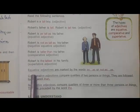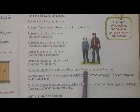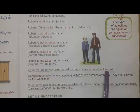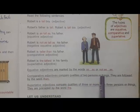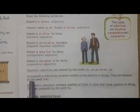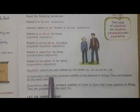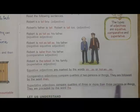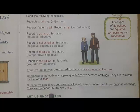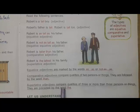Equative adjectives are marked by the words 'as — as' or 'not as — as.' Comparative adjectives compare qualities of two persons or things; they are followed by the word 'than.' As apparent from the word 'comparative,' we are making a comparison between two persons. Superlative adjectives compare qualities of three or more than three persons or things; they are preceded by the word 'the.'